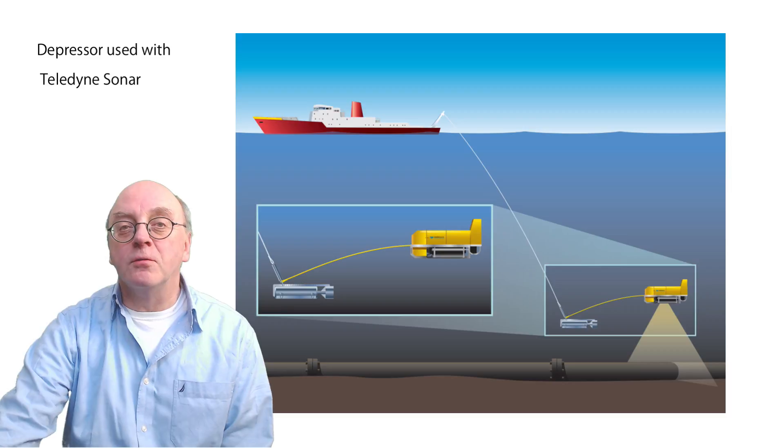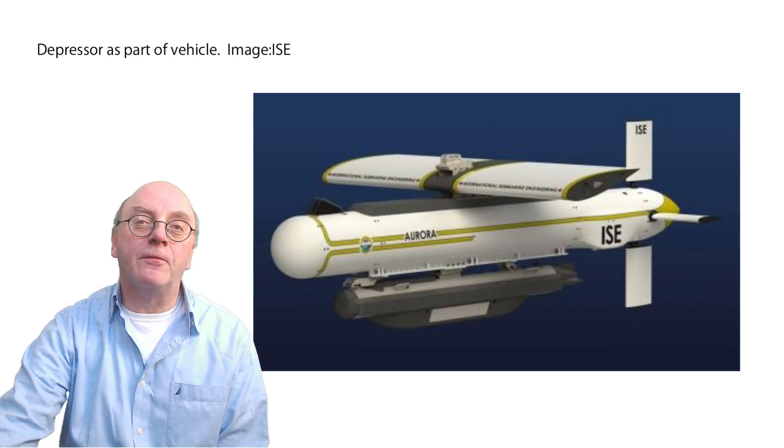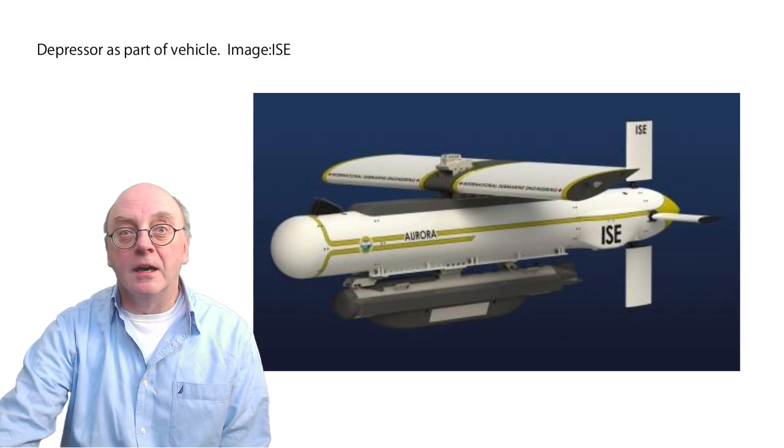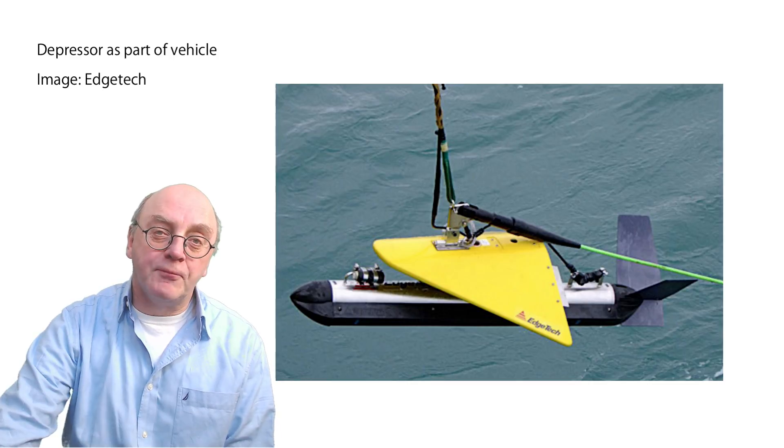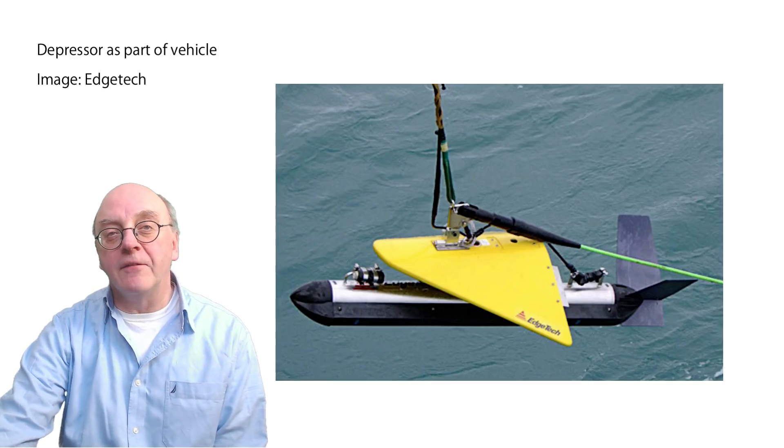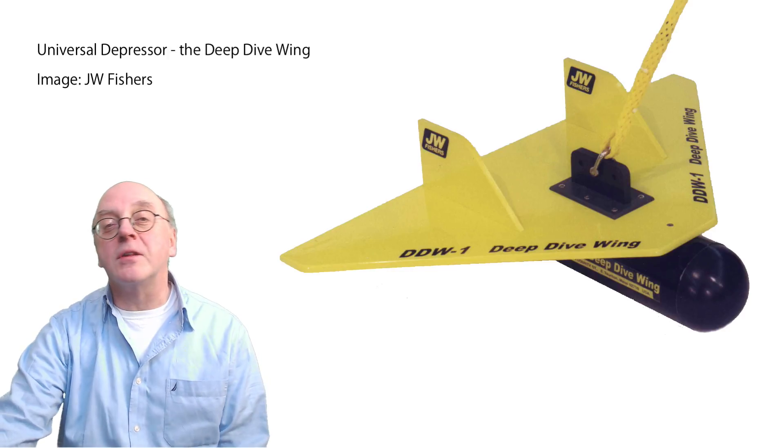The second is to add some sort of depressor and this creates a significant hydrodynamic downward force that overcomes the drag and pulls the tow cable downwards as the wing moves through the water. The depressor essentially changes the dive angle. That's the angle between the horizontal tow fish and the line up to the surface.